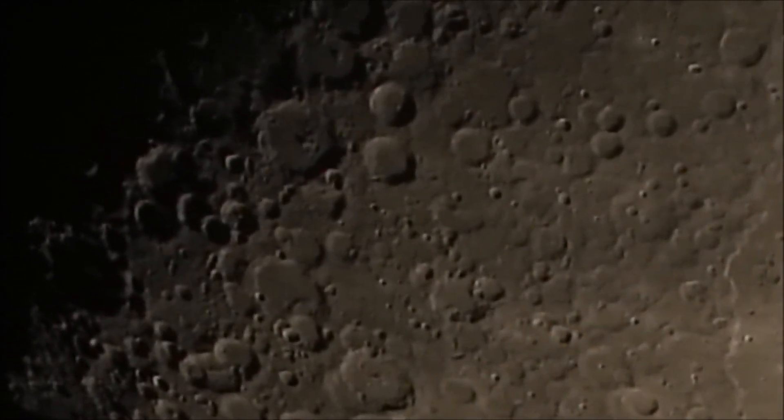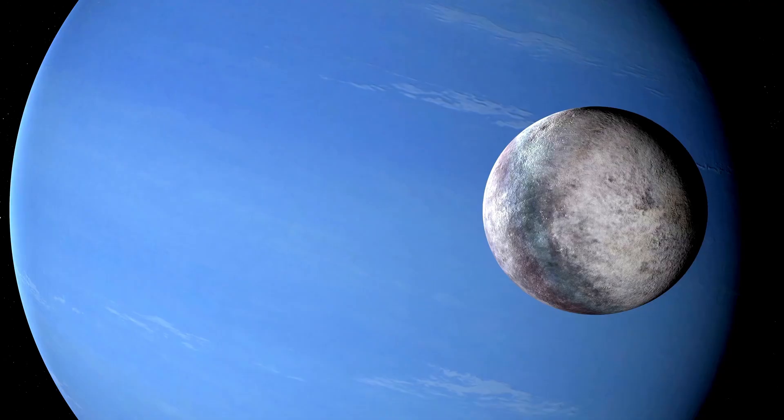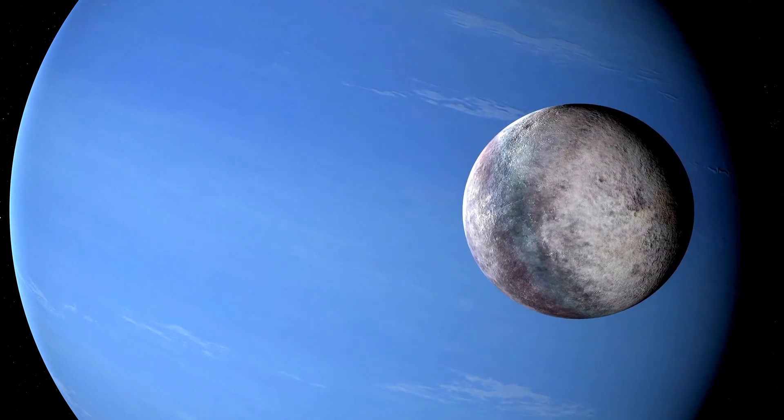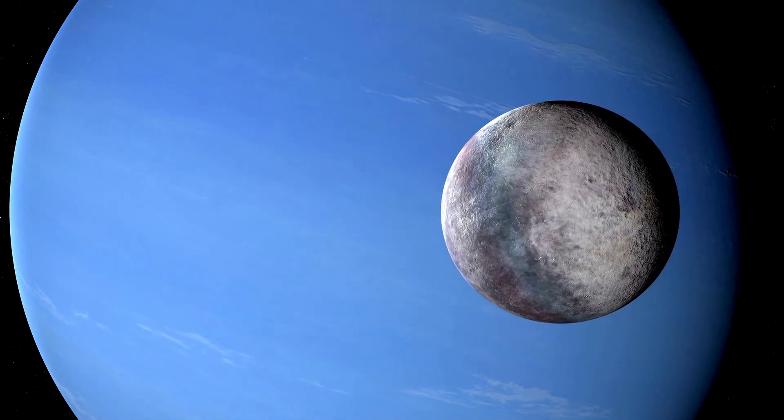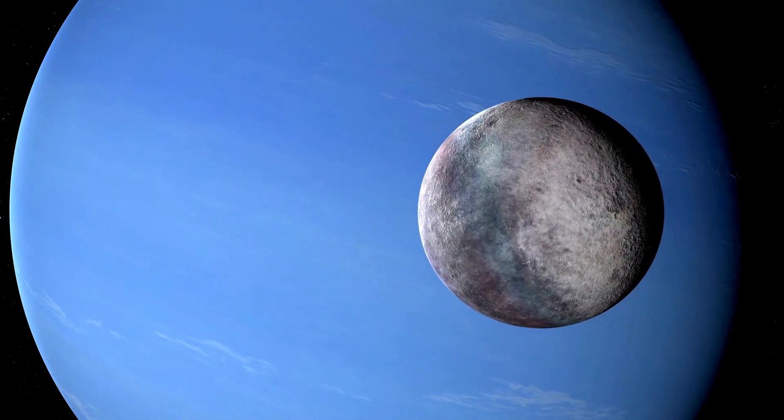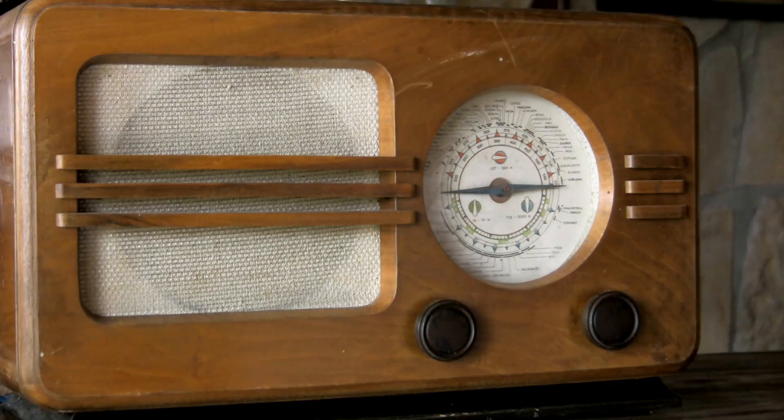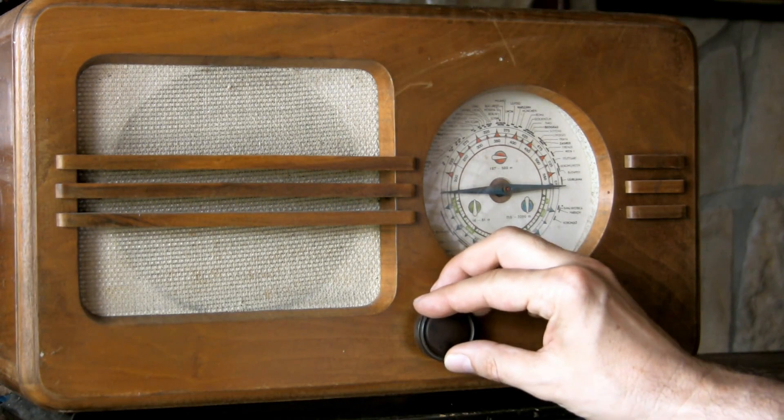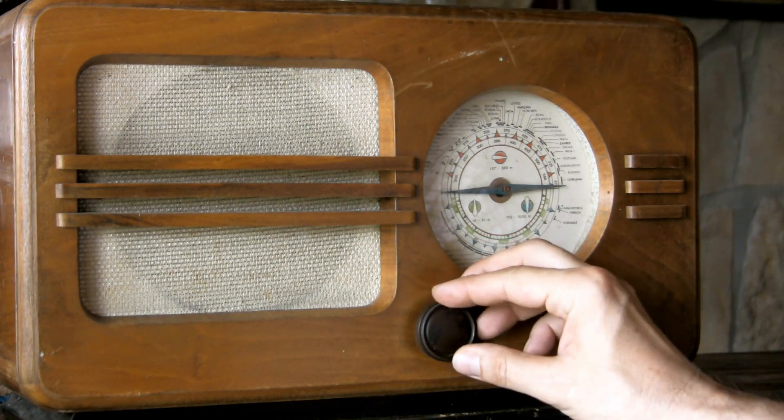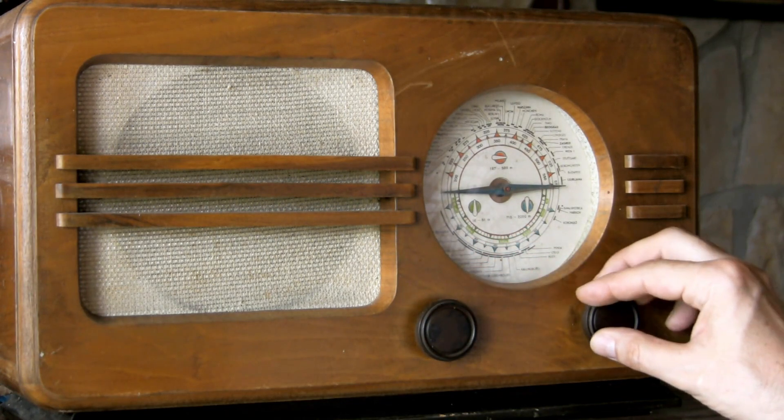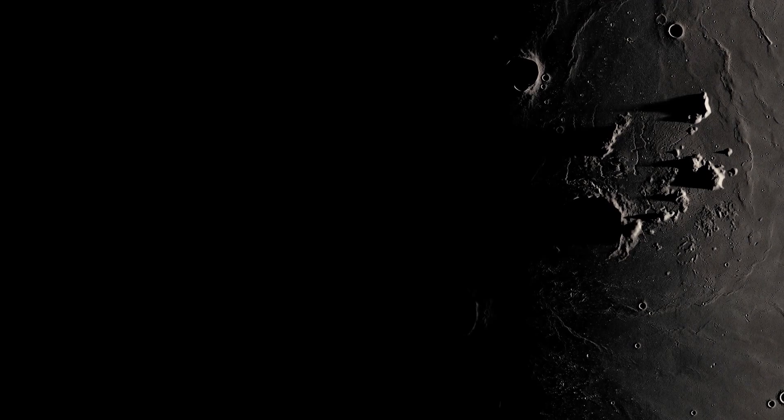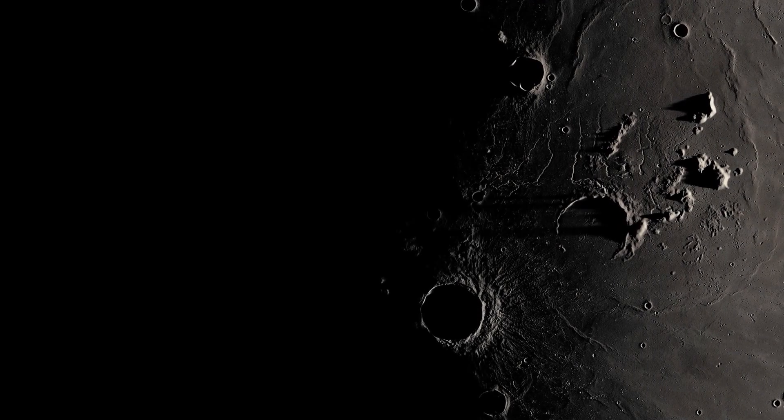Ceres is an intriguing dwarf planet, often described as an icy world with a rocky but porous surface. Different from most planetesimals, which are composed primarily of rocks and metals, Ceres is notable for its unique composition. Its surface is a mixture of water ice and hydrated minerals, including clays and carbonates, which give it a less dense structure than its rocky neighbors.